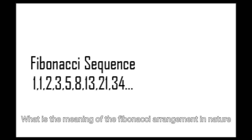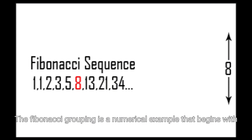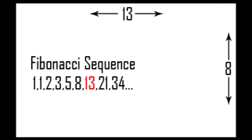What is the meaning of the Fibonacci arrangement in nature? The Fibonacci grouping is a numerical example that beginnings with 0 and 1, and each ensuing number is the amount of the two going before numbers.